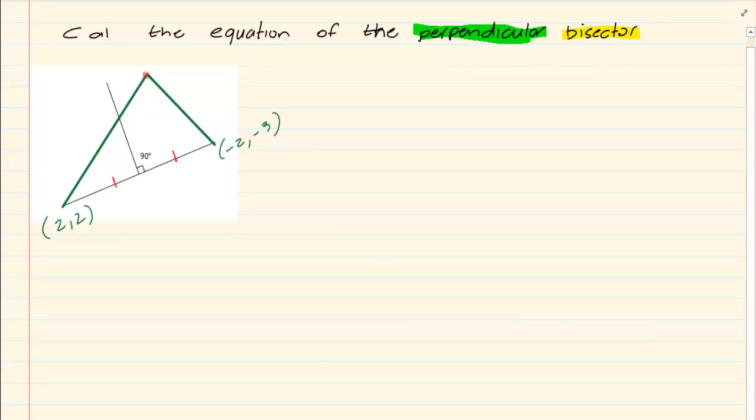Now a perpendicular bisector does not need to start from a vertex. It can be from any random point. What is important is that it is cutting the point in half and it is cutting at 90 degrees.